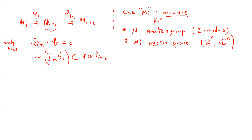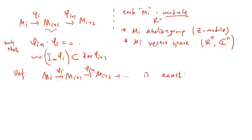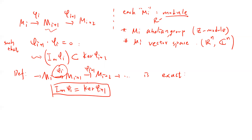By definition, if you have a sequence and it is exact, that means for each phi_i, the image equals the kernel of the next map. So basically, the objects which are sent to zero always come from the left. That's just one sentence — this is called an exact sequence.